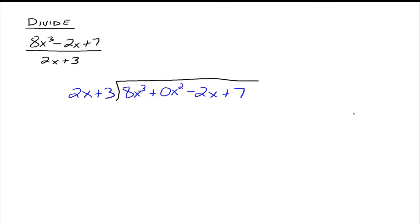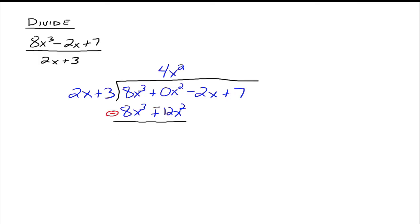We ask: what do we need to multiply 2x by to make it look exactly like 8x cubed? That would be 4x squared. So we put 4x squared up top. We have 4x squared times 2x, which is 8x cubed, and 4x squared times 3, which is 12x squared. Go back and subtract this polynomial — change the signs: this becomes minus, and this becomes minus. Add them up: the 8x cubed goes away. We have 0x squared minus 12x squared, which gives us negative 12x squared.